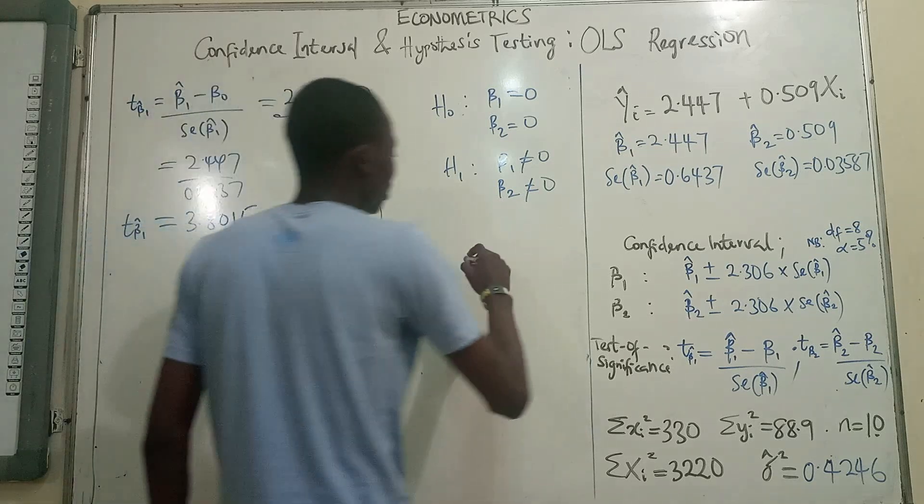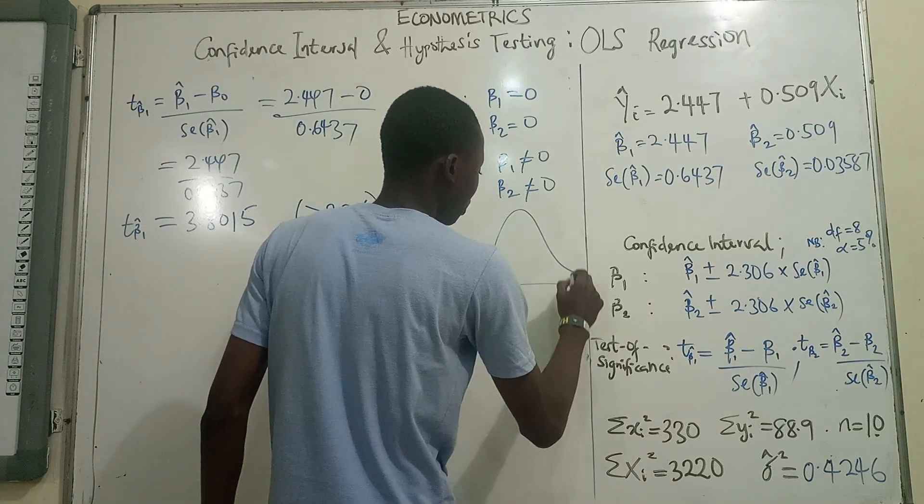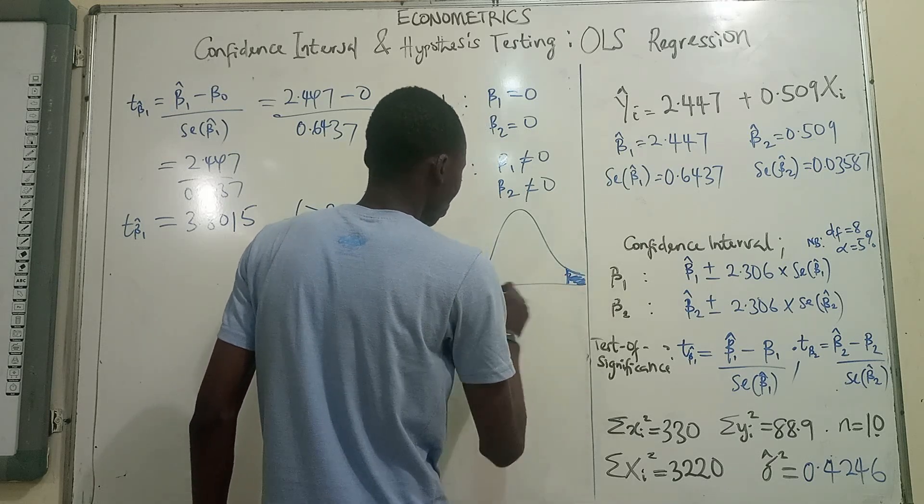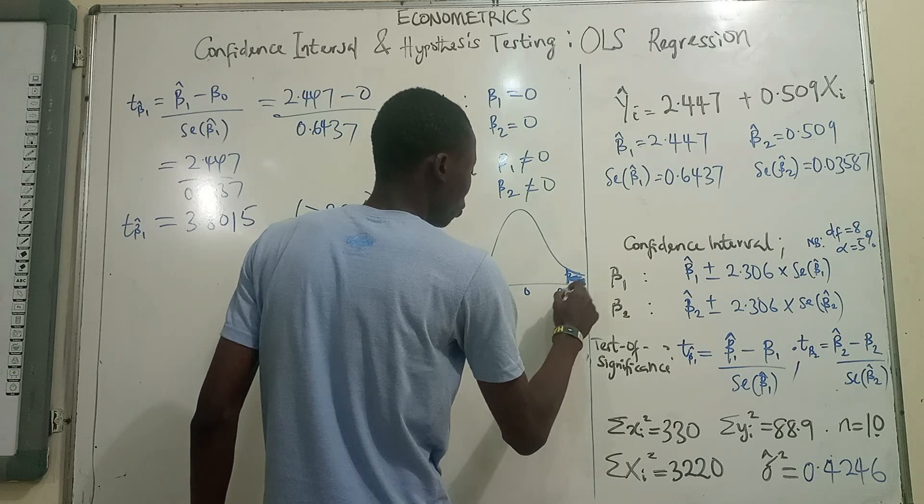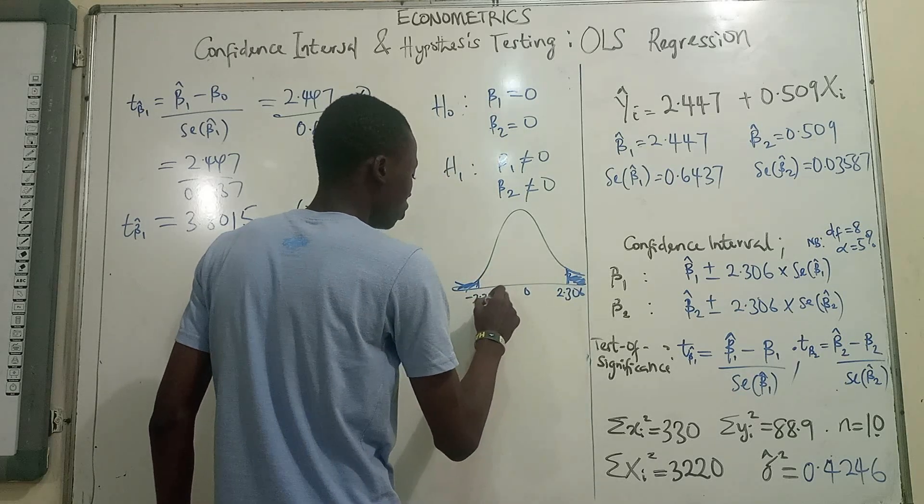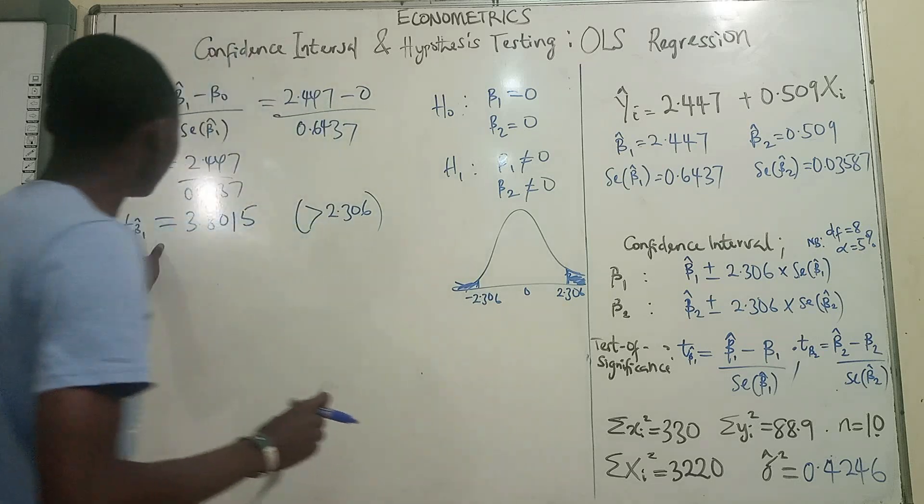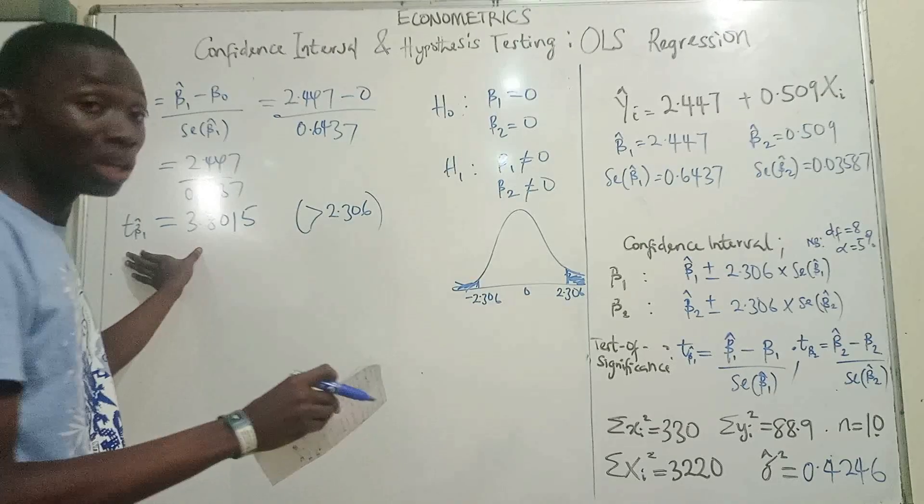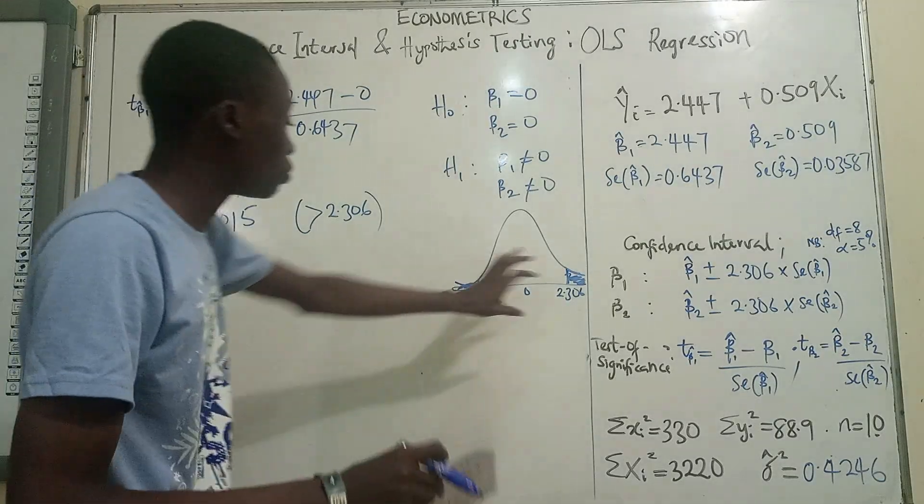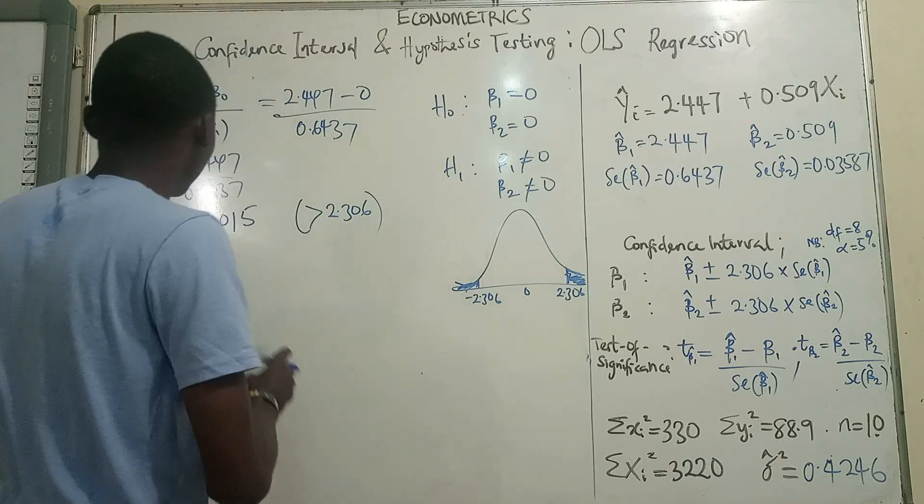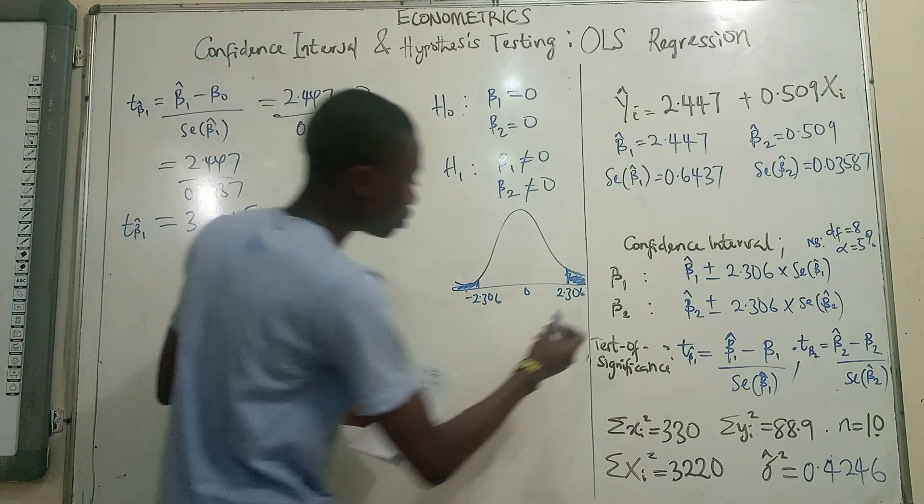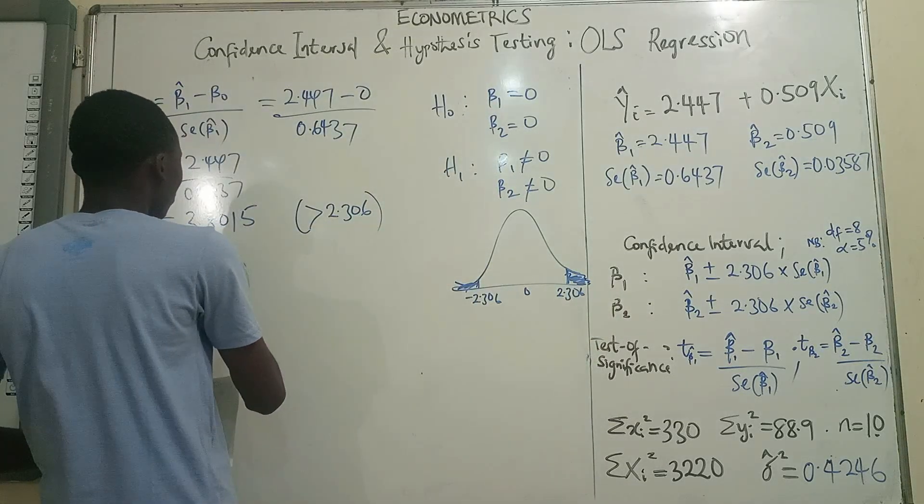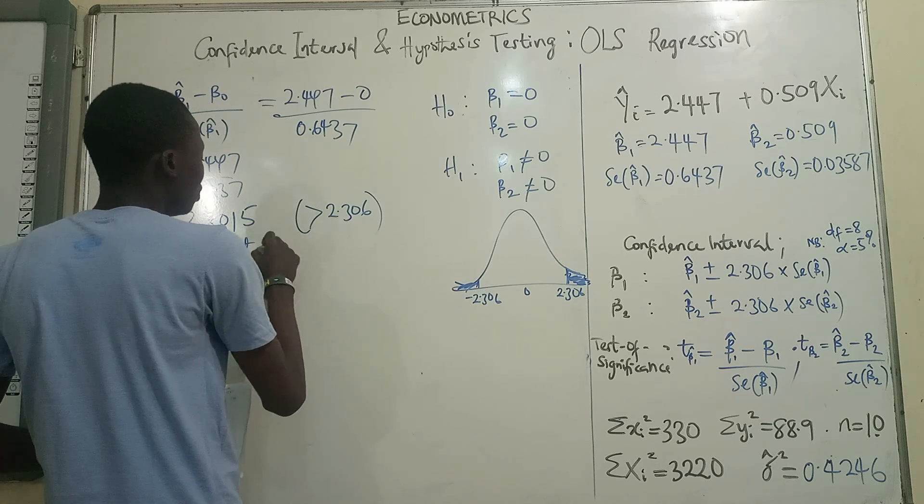Remember the diagram that we have drawn earlier, the T diagram. And here we had a rejection region. I said here was 2.306 and minus 2.306. So if you try to normalize 2.447 to a T statistic and if you try to put this on this graph, 3.8015 would be somewhere around here. And it falls in the rejection region.